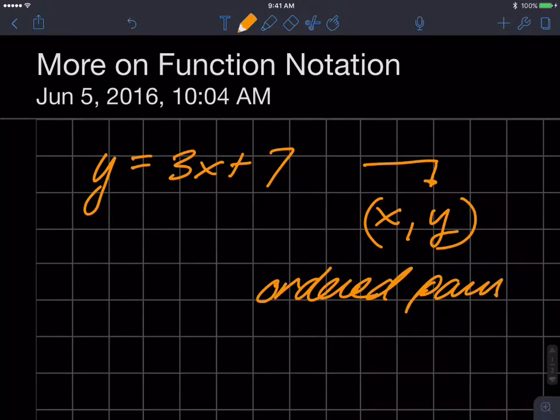And so based on our definition of what a relation is, this is a relation because it represents a whole set of ordered pairs, infinite set of ordered pairs for that matter, because that would be a line. So an infinite set of ordered pairs.